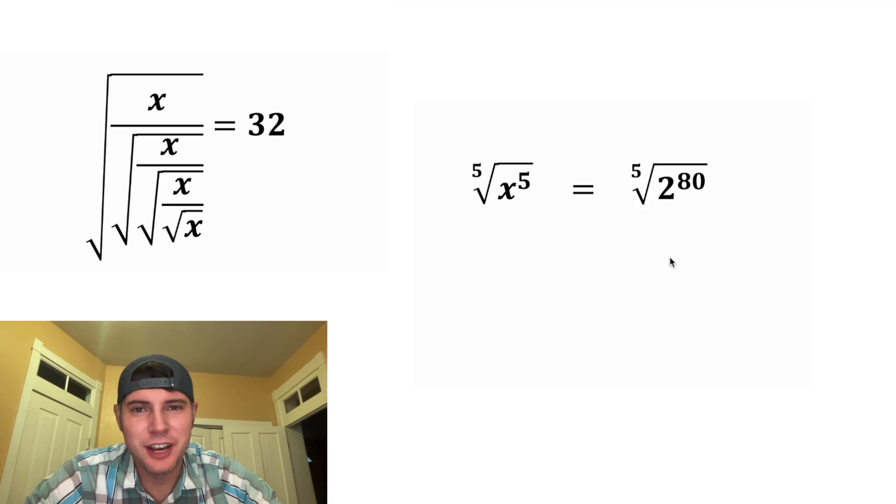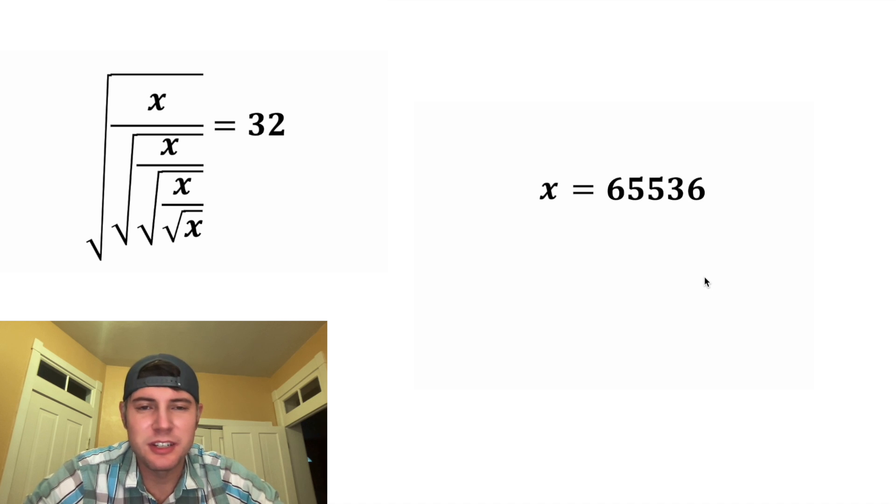We can take the 5th root of both sides. On the left-hand side, we just have x. And on the right-hand side, we can do this 80 divided by 5 to give us 2 to the 16. And 2 to the 16th power is equal to 65,536. And that's the answer to our question. We can put a box around it.